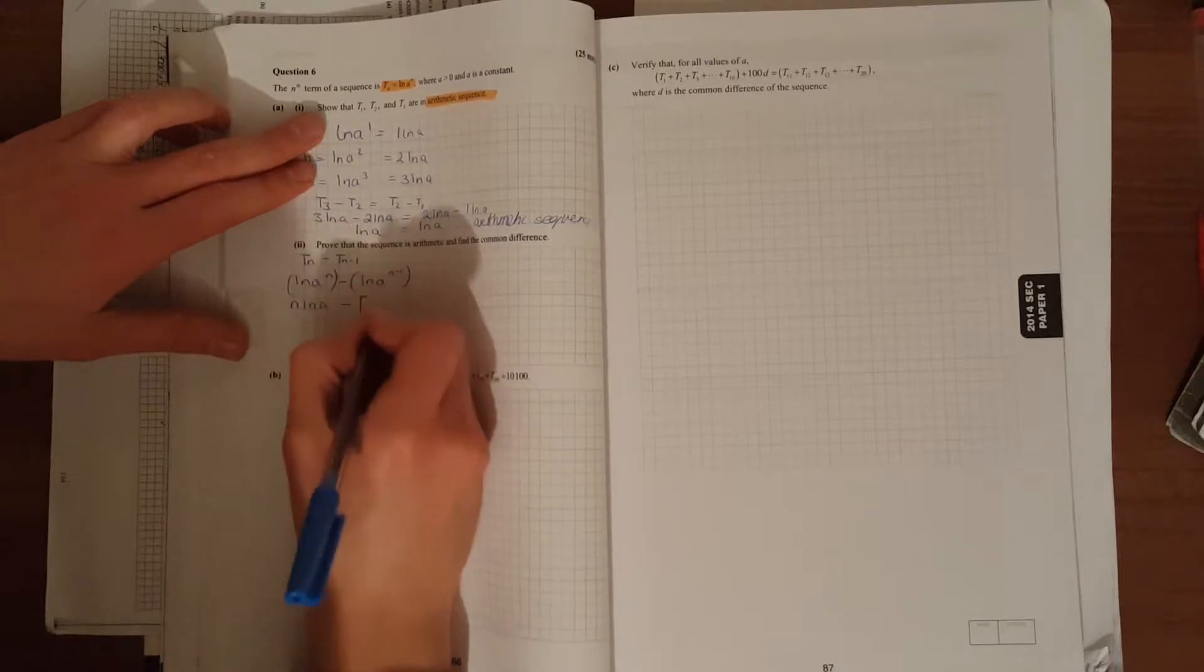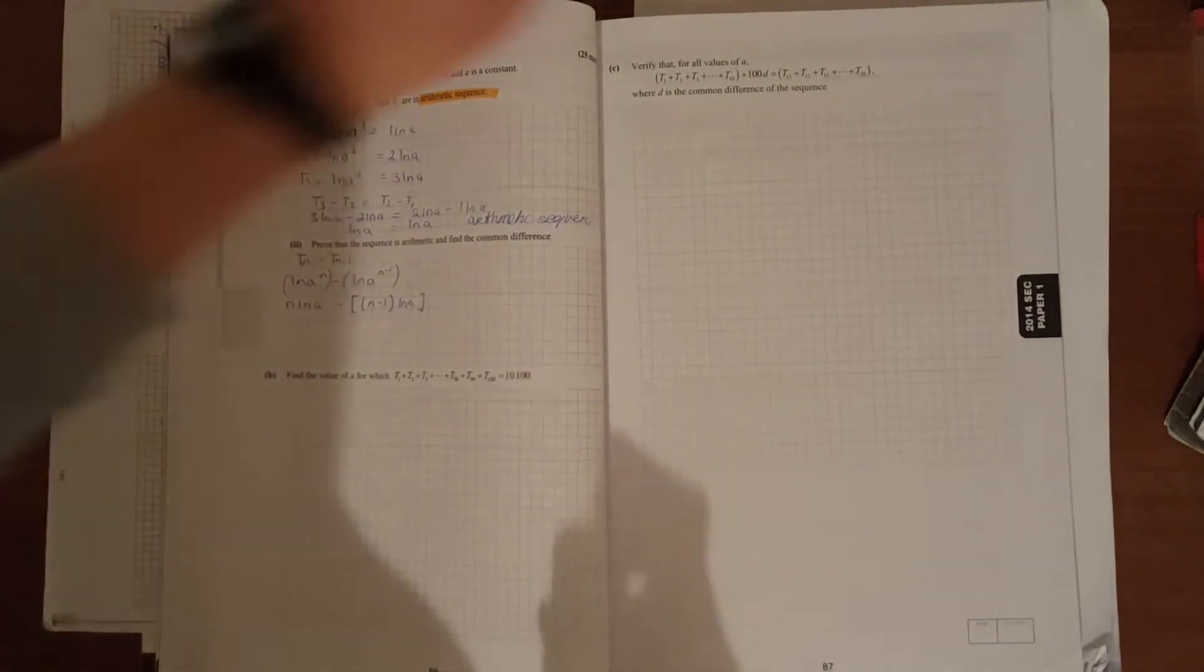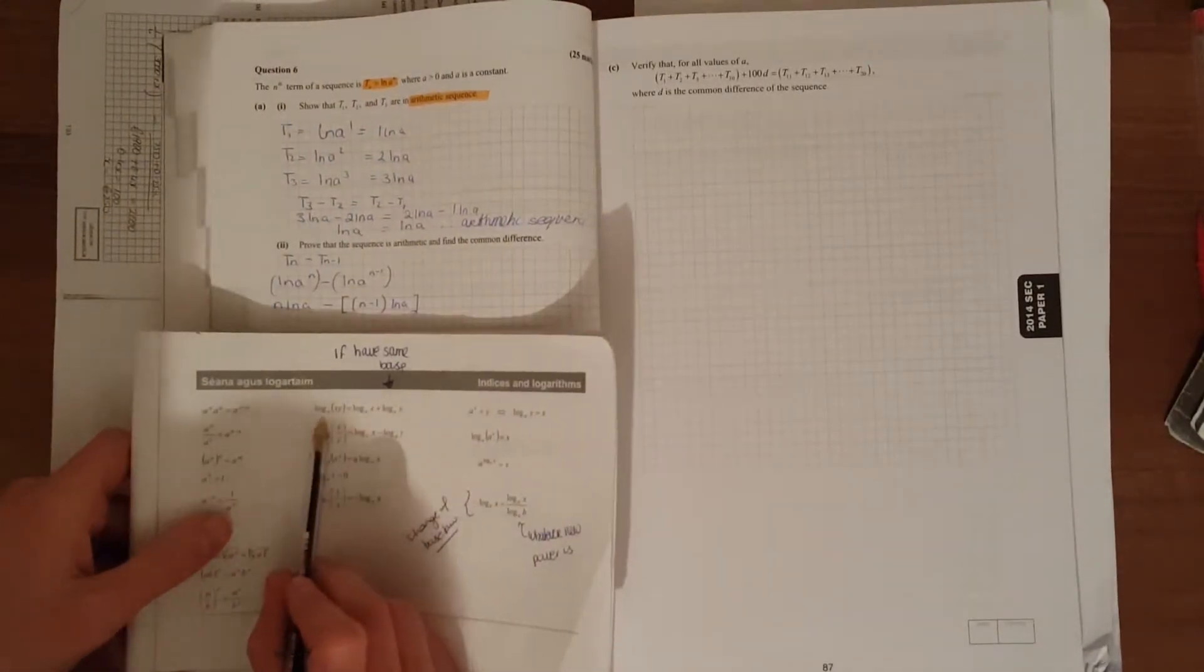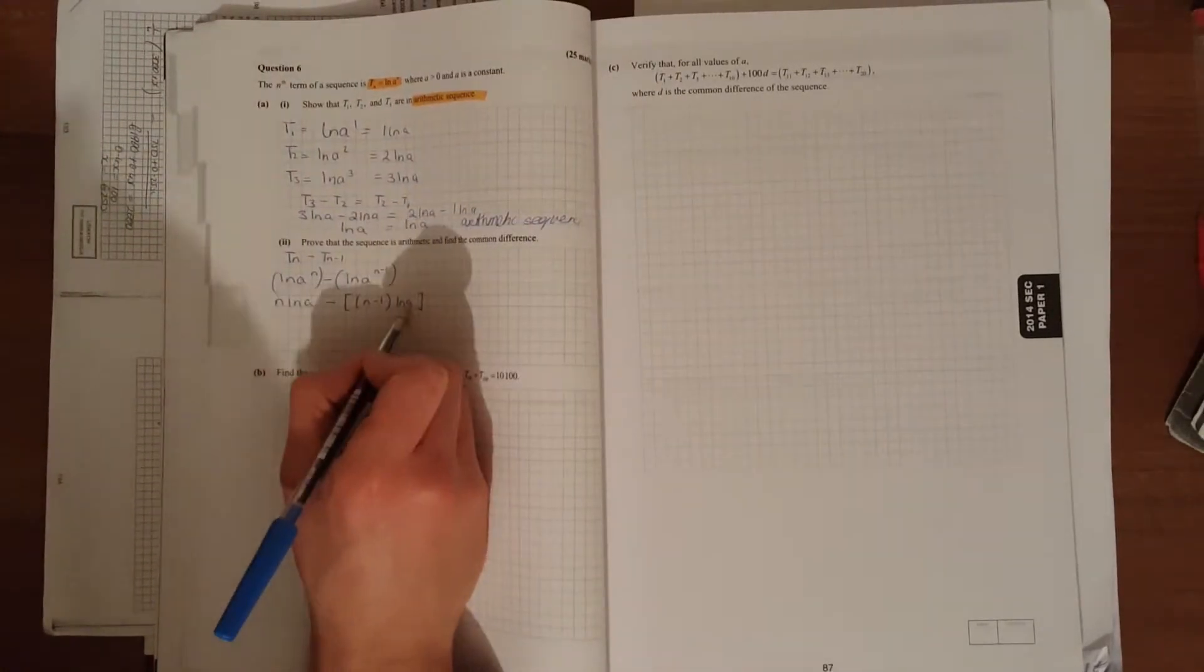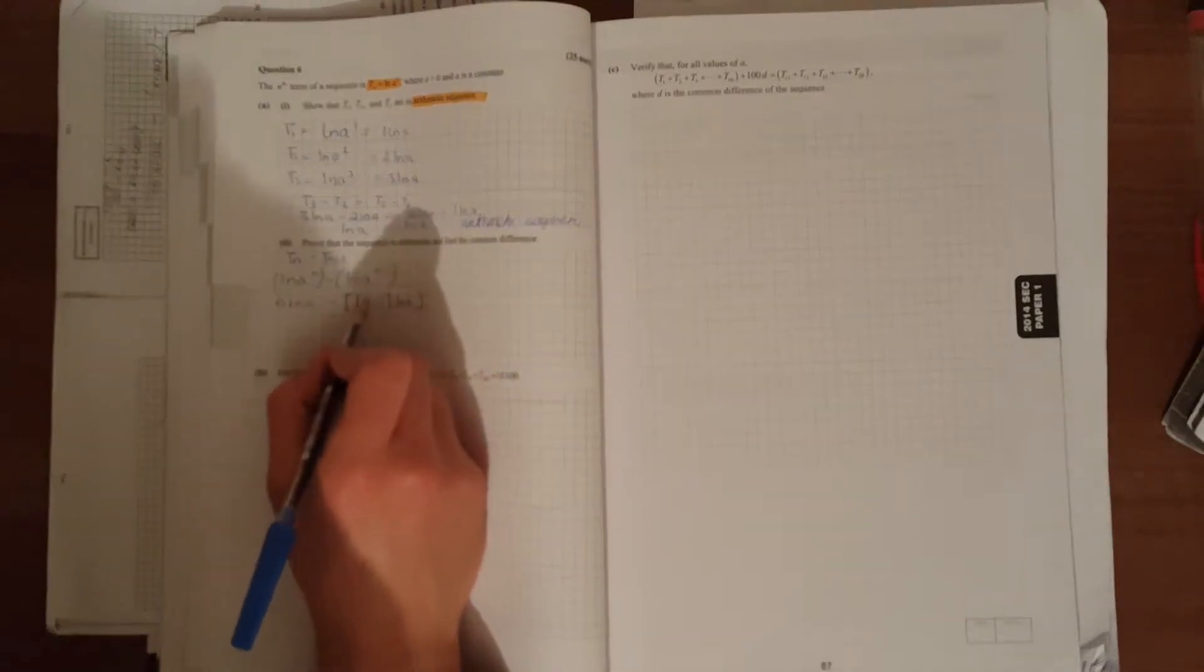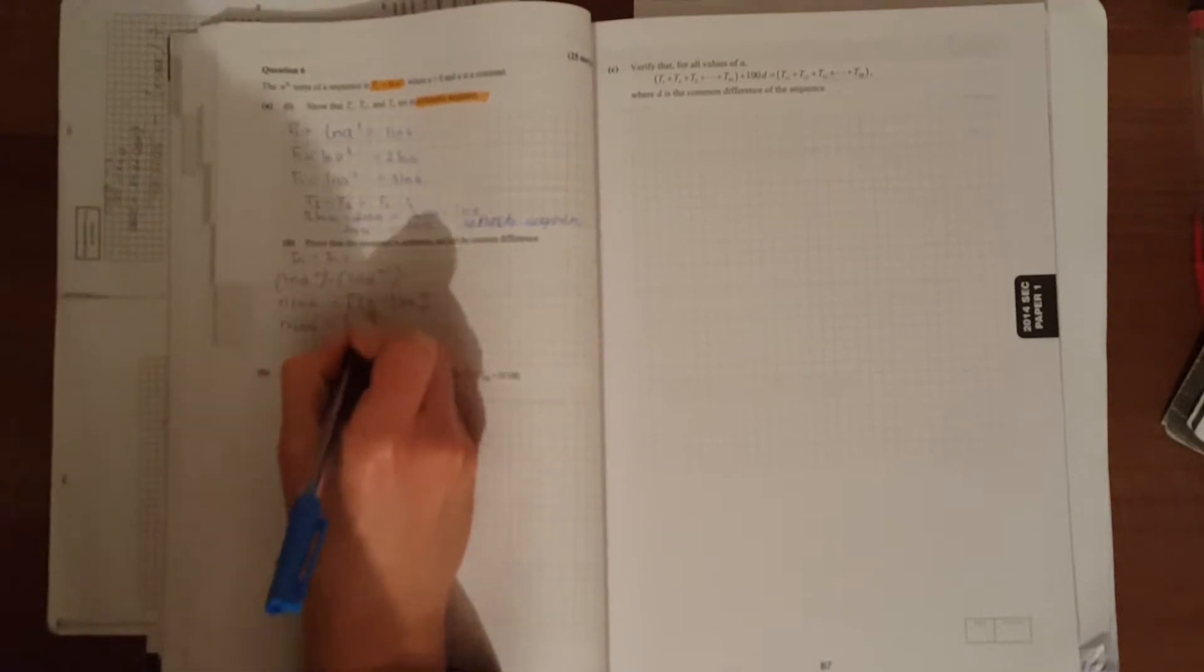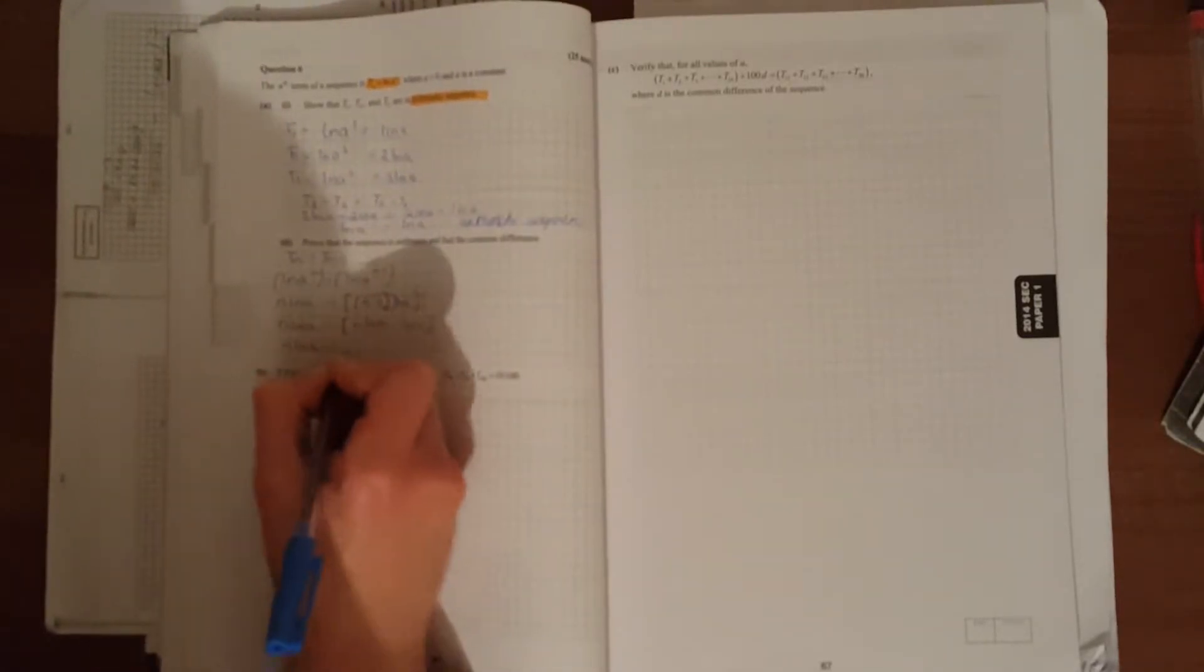n·ln(a) minus, in big square brackets we could make mistakes with signs, (n-1)·ln(a). Just be careful using our rules of logs. We're going to have n·ln(a) minus, let's tidy that up by bringing the minus outside the bracket.